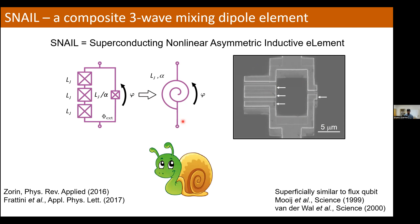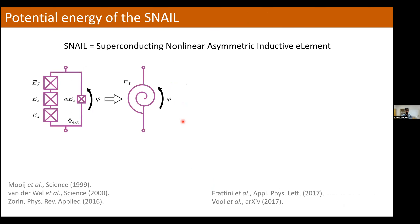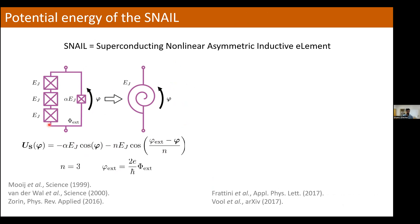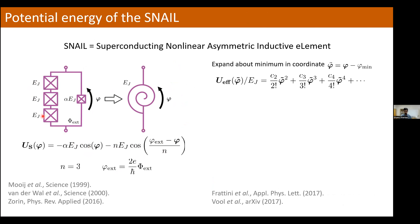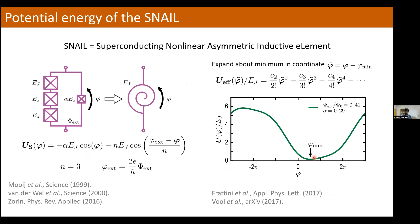Why is the SNAIL useful? You can understand what it does by looking at the potential energy function: the first term comes from the small junction and the second from the three larger junctions. If you Taylor-expand this potential energy function about a minimum, it has a quadratic term as expected, a cubic term in the potential energy as a function of the phase coordinate phi across the junction, a quartic term, and potentially higher-order terms. These are the nonlinear terms in the potential energy function that we are going to use to show parametric amplification.